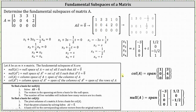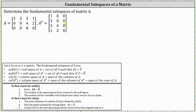Now let's work on determining the column space of A transpose as well as the null space of A transpose. Let's first find A transpose. Remember, to find A transpose we take the rows of matrix A and make them the columns of A transpose. The next step is to set up the equation A transpose times vector x equals a zero vector, write the augmented matrix, and write the augmented matrix in reduced echelon form.